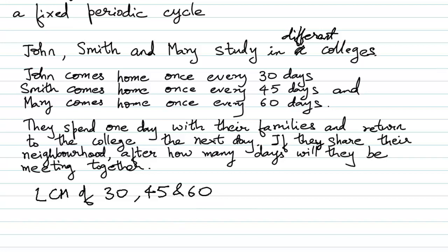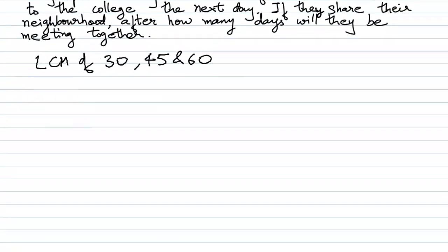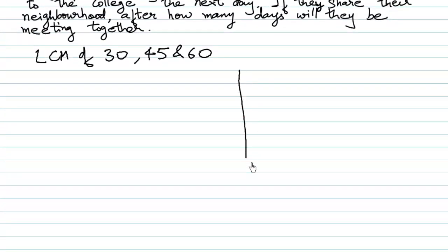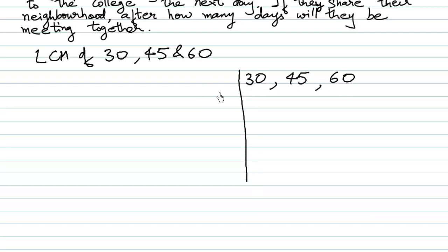Let us see why. First of all, let us find the LCM of 30, 45 and 60. We know that at least two of these numbers are divisible by 2.